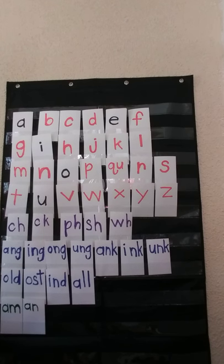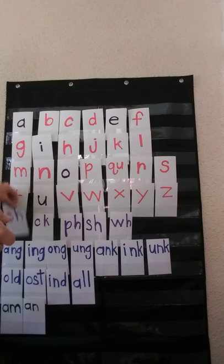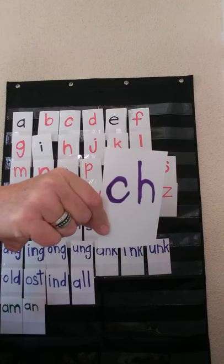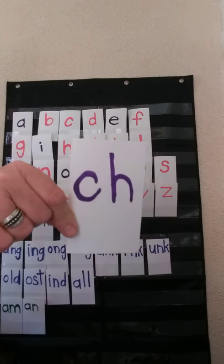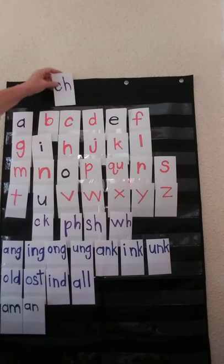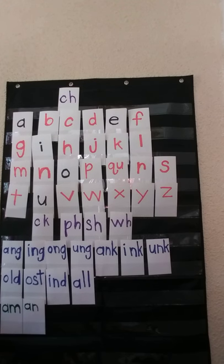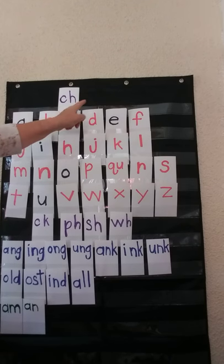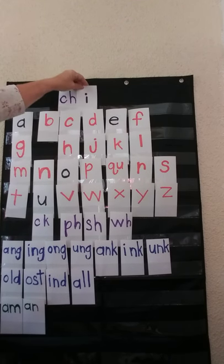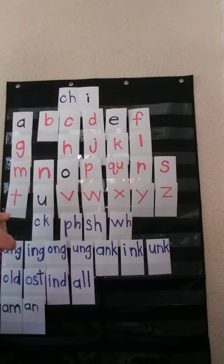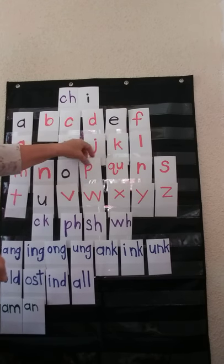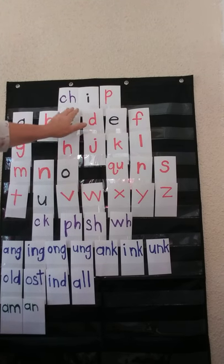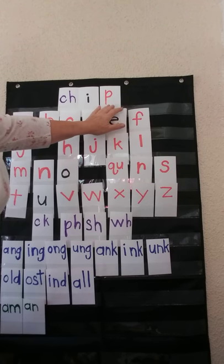Now let's try words with a digraph. A digraph is two letters put together that say one sound. This digraph is CH — ch can go at the beginning or the end. So let's put the CH sound up here. Now I want to spell the word 'chip.' What would be the next letter sound? I. And what would be the last letter sound? P. CH, I, P — chip. Very good.